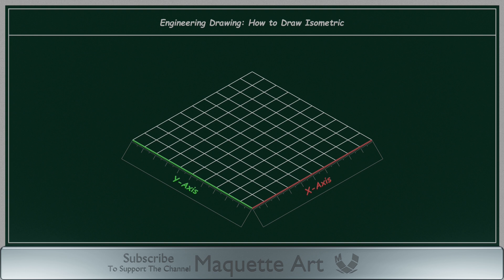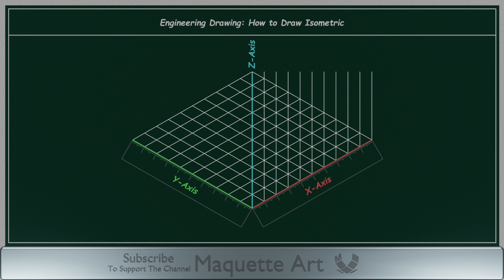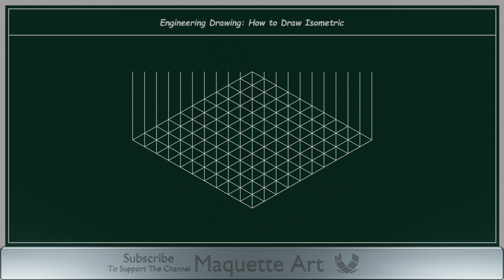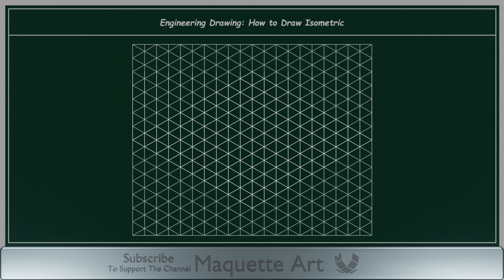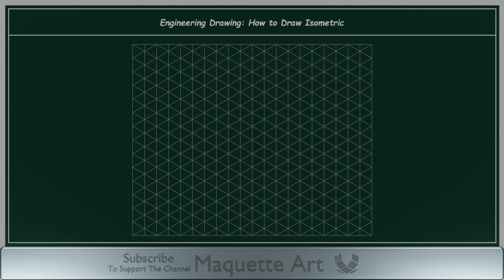Now let's add the z-axis for the height. The z-axis is going to be a vertical line. I will extend and repeat the lines of each axis to fill the paper. We will call this an isometric grid. Each line on this grid is 1 cm in length.